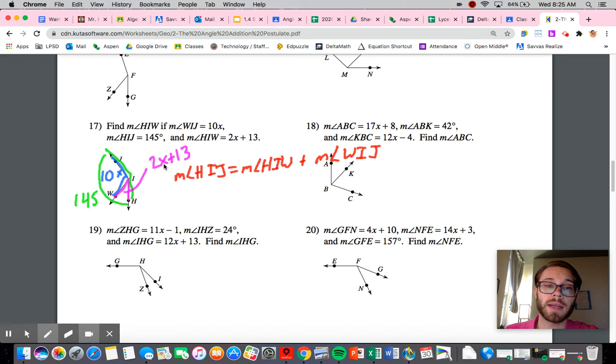We know that HIJ is 145. So I'm going to write 145 here. We know that the measure of angle HIW is 2x plus 13. So I'm going to write that. And we finally know that the measure of angle WIJ is 10x. So let's add that together as well. So 10x.